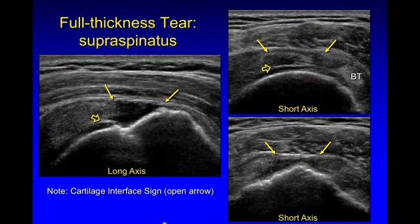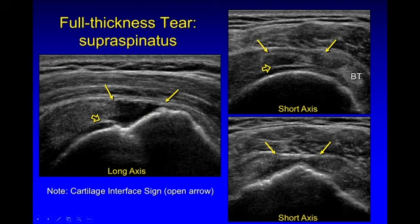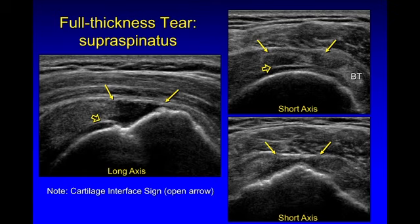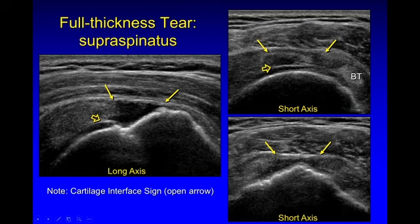Here's an example of a full thickness tear. This one is a little bit easier because the defect is filled with anechoic fluid, which clearly outlines the end of the tendon stump torn from the greater tuberosity. Also note another indirect sign of a rotator cuff tear by ultrasound: the cartilage interface sign. If you have fluid laying on top of the normal hyaline cartilage, the interface between that cartilage and fluid will be even brighter than normal, indicating extension to the articular surface. Here in short axis we can see the full width of the tear, and looking more distal over the greater tuberosity facets, the width of the rotator cuff tear.